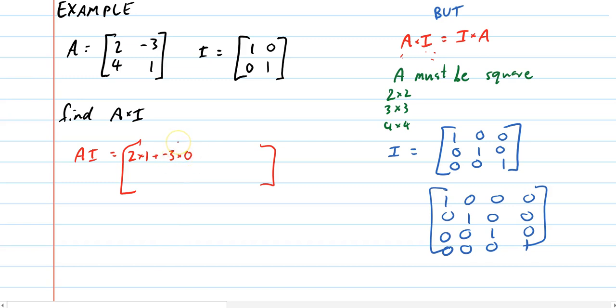And obviously, that bit's going to be 0. This next bit is going to be 2 times 0, which is 0. Negative 3 times 1, which is negative 3.